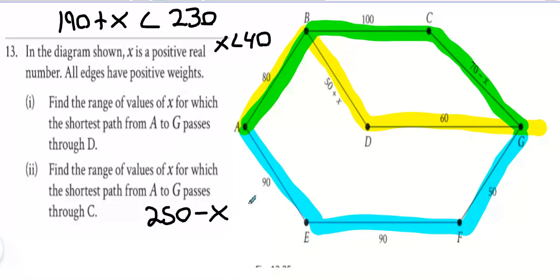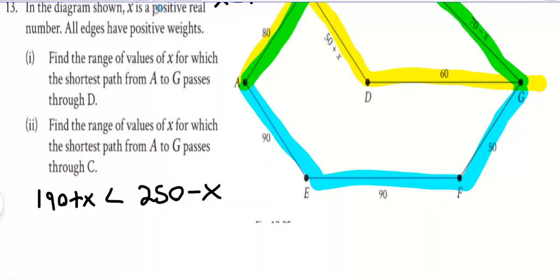Now I also want this route to be smaller than 250 minus x. So what does that mean? 2x less than 60, and then x less than 30. The x less than 30 disregards the x less than 40, doesn't matter anymore.